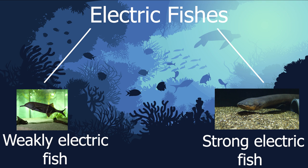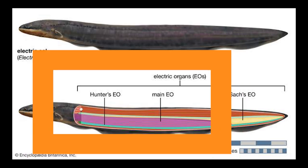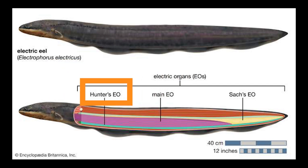Strong electric fish can produce very high voltages, whereas weak electric fish's currents are too weak to stun its prey, so they use it for navigation or communication. Eels have three main organs to help them. The electric organ and hunter's organ are used for high voltage electricity used for stunning the prey.